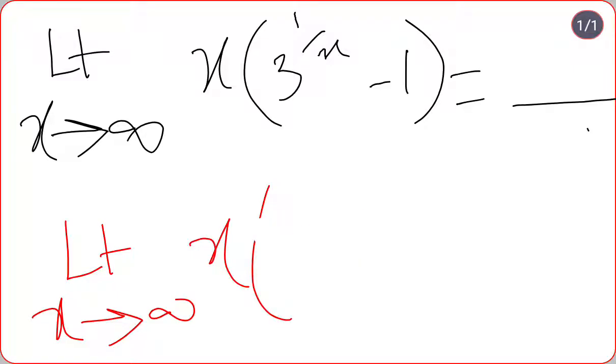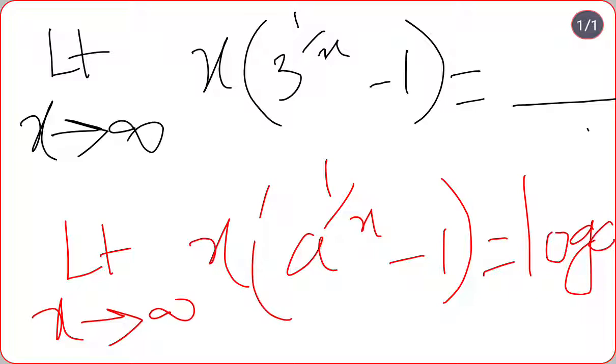My shortcut formula is: in place of this 3, I will be writing a to the power of 1 by x minus 1 is equal to log a. So this will be my shortcut formula to solve this problem.